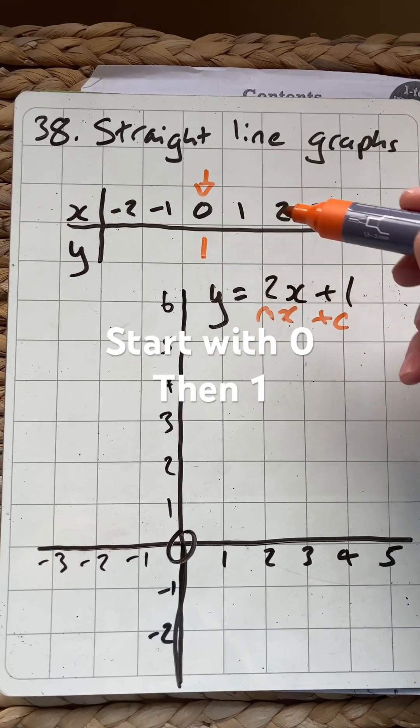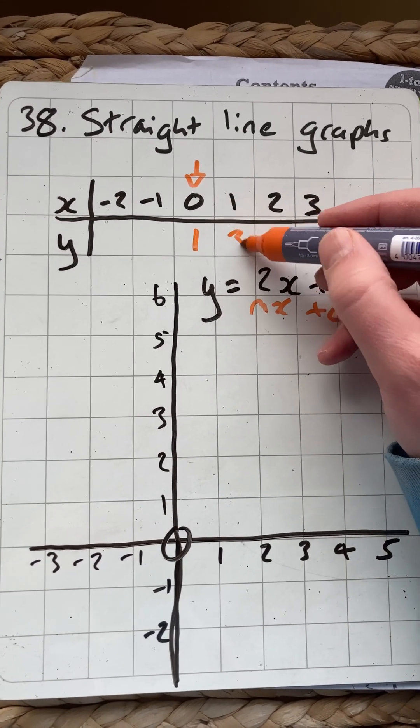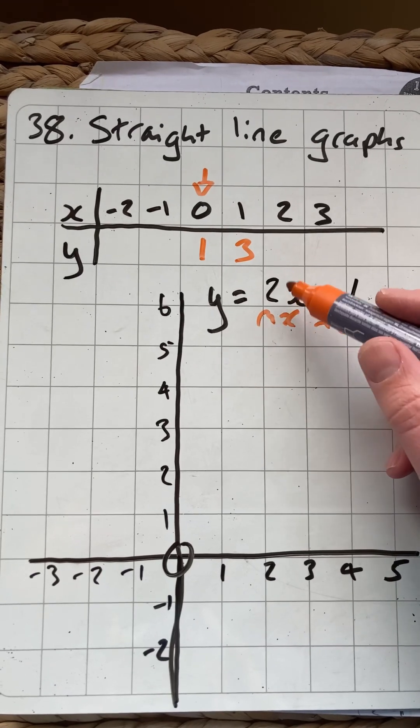Then go to the next easiest is 1. 2 times 1 is 2, plus that 1 is 3. It's going up in twos like an nth term sequence because of the gradient.